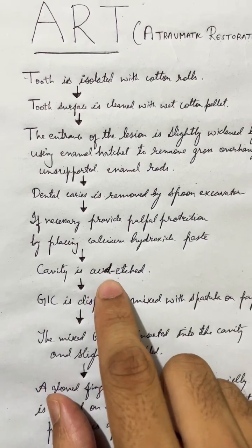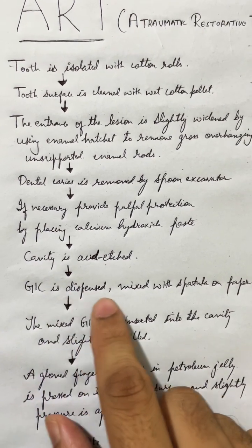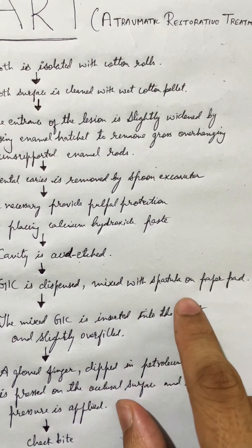Cavity is acid etched. GIC is dispensed and mixed with spatula on paper pad.